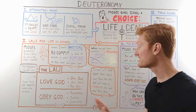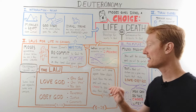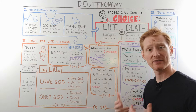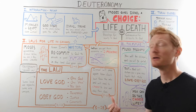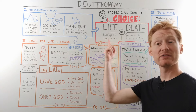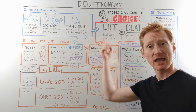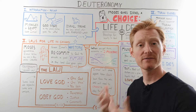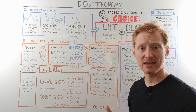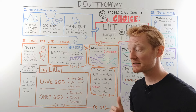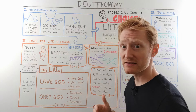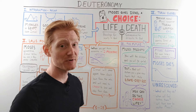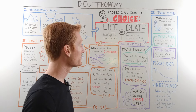Moses closes out this section by saying you need to do this ceremony and choose to love and obey God. If you do, things will go well. If you don't, God will expel Israel from the land he's giving them. And if you read the rest of the Old Testament, well, that's what happens. And Moses predicts that in the third section.